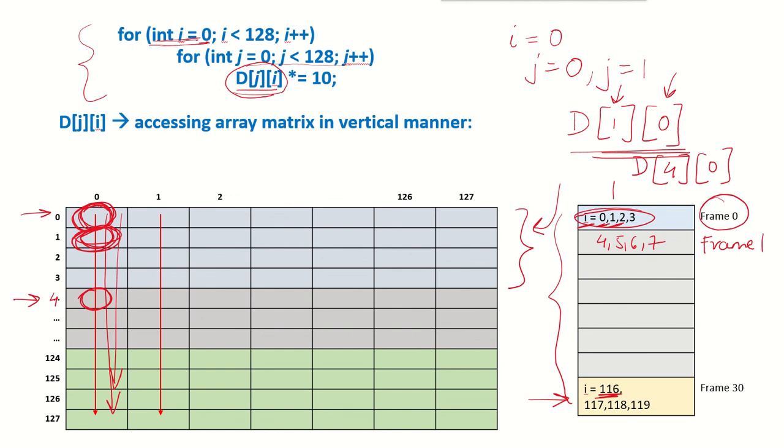Now this frame 0 was the one which was used very early. So this will be replaced by rows 120 to 123 and then finally frame 1 would be replaced by 124 to 127 rows.